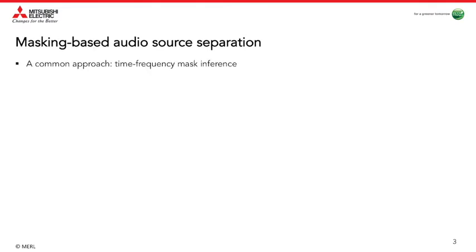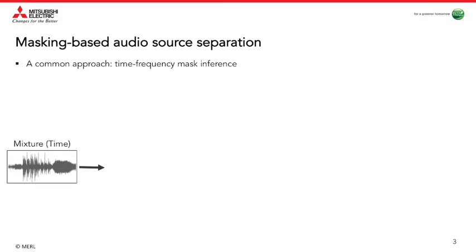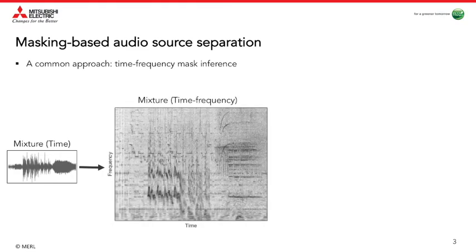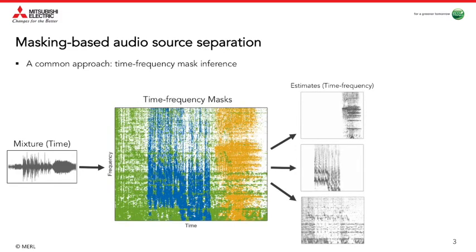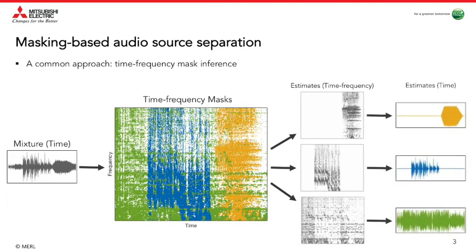Separation via mask inference is a common approach to solving the source separation problem. In a typical mask inference approach, the time-domain mixture recording is transformed into a representation with a higher level of separability. The time-frequency representation domain is most commonly used for masking-based source separation. In this domain, the mixture energy at each time-frequency bin is distributed between different sound sources using weighting functions known as time-frequency masks. In the final step, the time-domain version of each isolated source is estimated by applying an inverse transform to the corresponding mask representation.